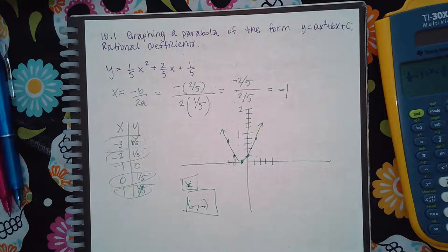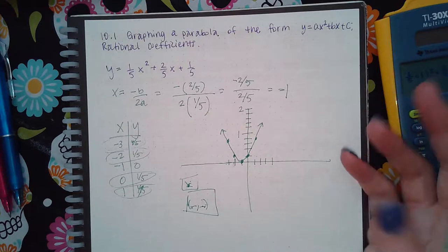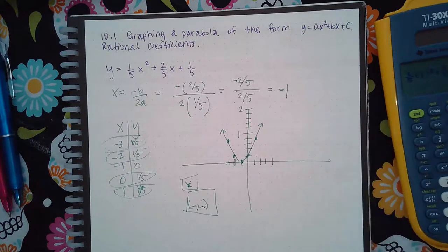Once you exit out, you should already have all five points plotted, and then you can just hit the graphing icon and it'll draw the parabola for you.